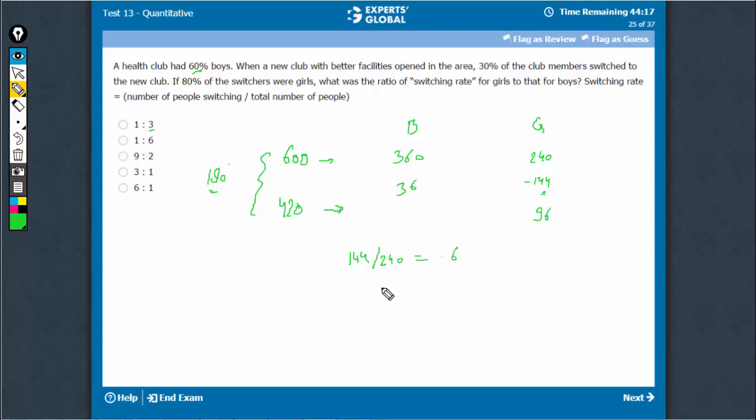For boys, the switching rate is 36 boys moved out of 360. So, this ratio is only 0.1.